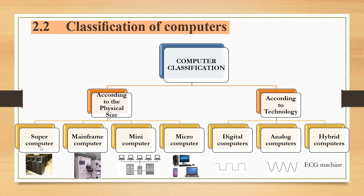Normally supercomputers are very rare because they are very expensive. Those are the highlighted points you have to remember. Some organizations like NASA are using this type of computer. That is a very special feature of the mainframe computer.